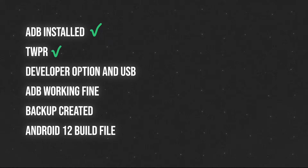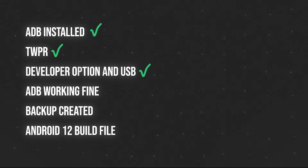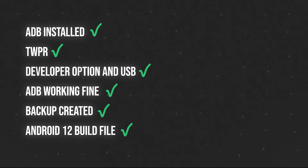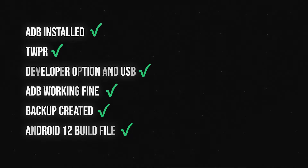Now we have everything for the installation of Android 12. Before we start, let's do a checkbox exercise to make sure we haven't missed anything: ADB installed, TWRP specific to your phone downloaded, developer option and USB debugging enabled, the phone is connected to the computer and ADB is working fine, backup of your phone data is completed, and Android 12 build is downloaded. If you have missed any one of these steps, go back and follow it again.